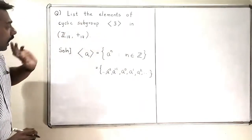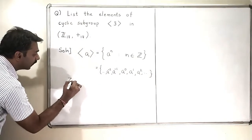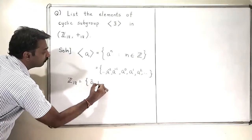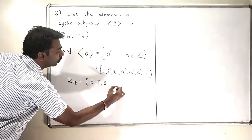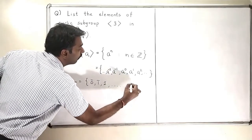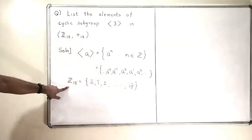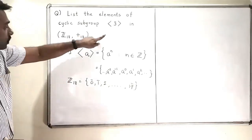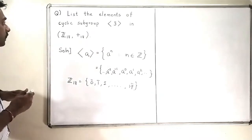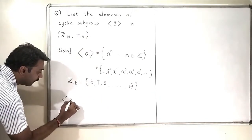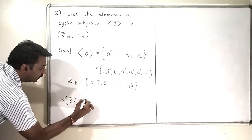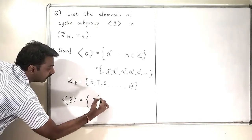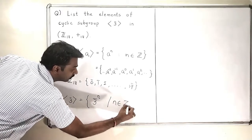Now let us go to our particular problem. Z₁₈ contains the elements 0̄, 1̄, 2̄ up to 17̄, because 18̄ will be treated as 0̄. So let us write the definition of cyclic subgroup generated by 3̄. The cyclic subgroup generated by 3̄ is the set of all elements of the form 3̄ raised to N, where N is an integer.